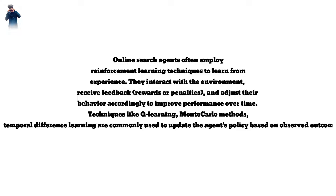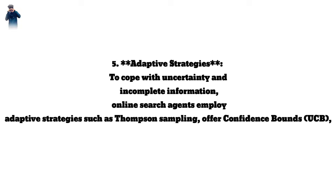Online search agents often employ reinforcement learning techniques to learn from experience. They interact with the environment, receive feedback — rewards or penalties — and adjust their behavior accordingly to improve performance over time. Techniques like Q-Learning, Monte Carlo methods, or temporal difference learning are commonly used to update the agent's policy based on observed outcomes.